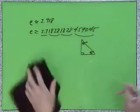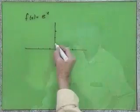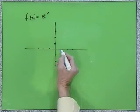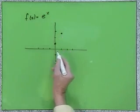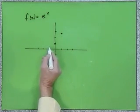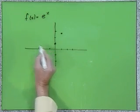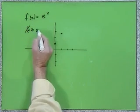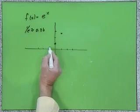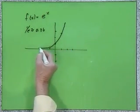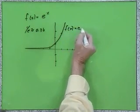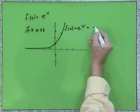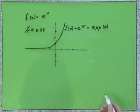The graph of e^x has three target points. Starting from the origin, we go up 1. If I go 1 to the right, I go up e, or about 2.7. If I go 1 to the left, I go up 1/e, which is about 0.36, or roughly a third. This is the graph of f(x) = e^x, called the natural exponential function, sometimes abbreviated as exp(x).